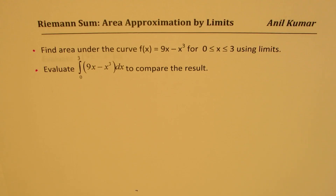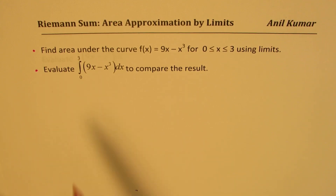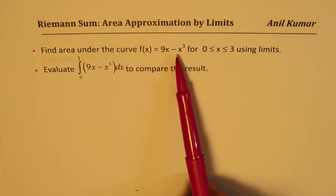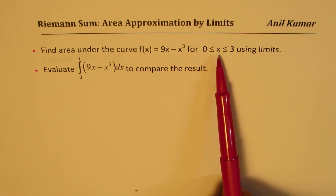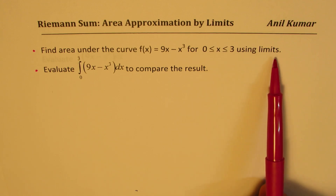I'm Adil Kumar. Welcome to my series on Riemann Sum. We'll have an example here to illustrate how to find the area under the curve and also verify the result using definite integrals. The question is: find the area under the curve f(x) = 9x minus x³, for x greater than or equal to 0 and less than or equal to 3, using limits.